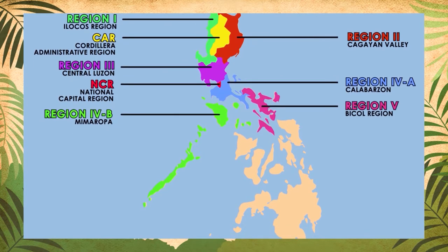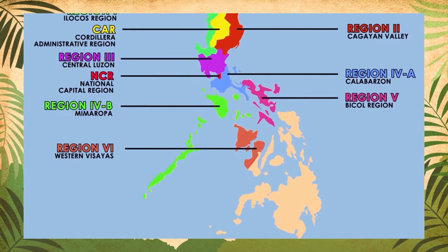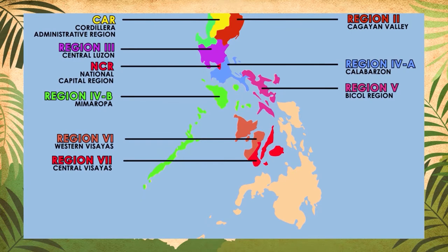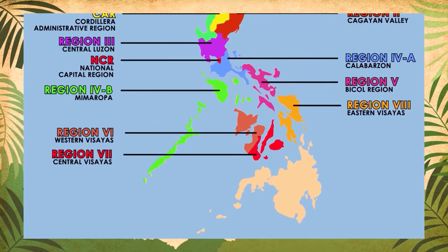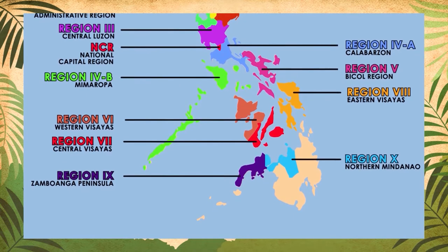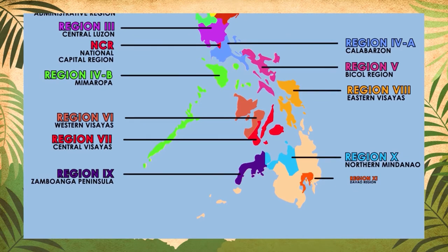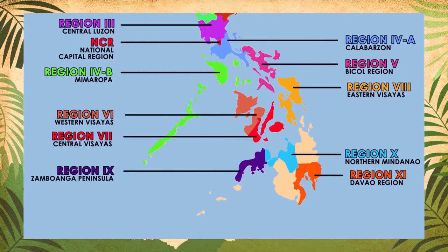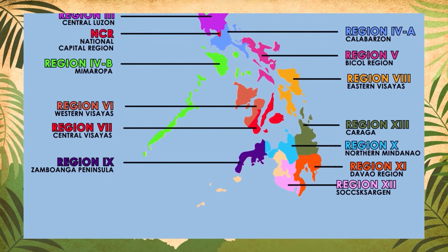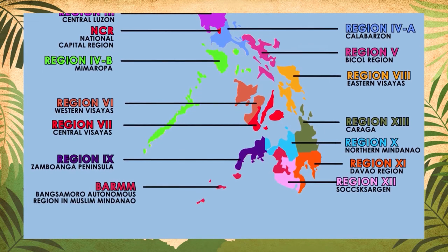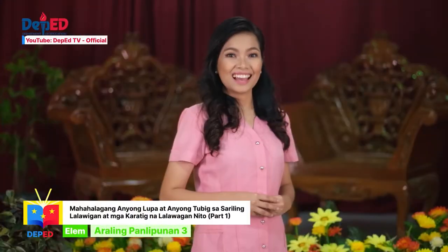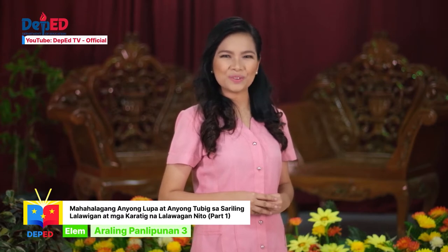Region 5, Bicol Region; Region 6, Western Visayas; Region 7, Central Visayas; Region 8, Eastern Visayas; Region 9, Zamboanga Peninsula; Region 10, Northern Mindanao; Region 11, Davao Region; Region 12, Soccsksargen; Region 13, Caraga; at ang Bangsamoro Autonomous Region in Muslim Mindanao o BARMM. Saang rehyon kabilang ang inyong lalawigan?